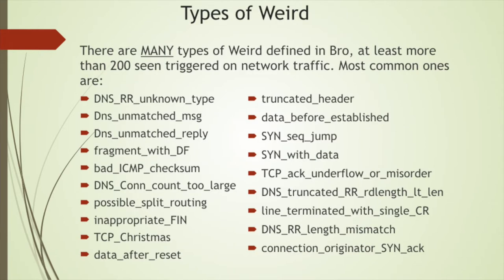Types of weirds: there are many types defined in Bro. These are the top 20 or so weirds I found in my weird.log file. As you can see, the weird names are pretty descriptive, so if you see them in your weird.log file you can kind of infer what's going on and then figure out why exactly they are triggering. These are the top 20 weirds we see in our network, excluding some we've already disabled.